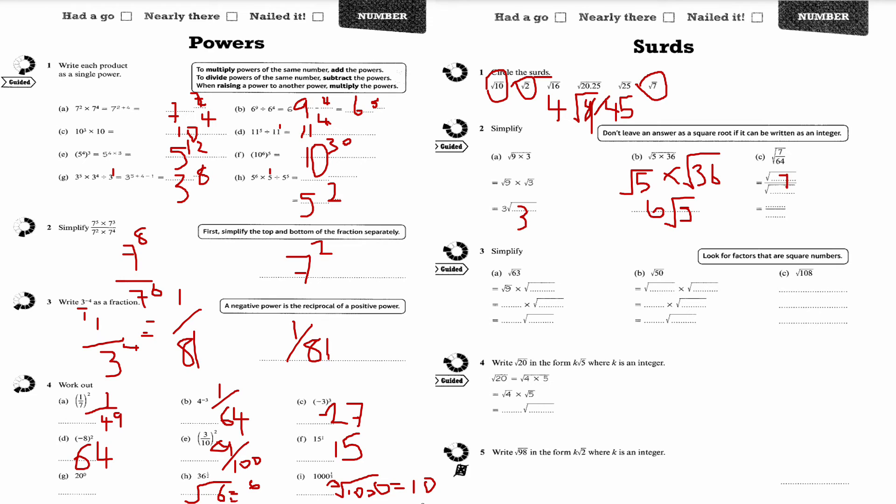This is root 7 over root 64. Root 7 stays the same, so the answer becomes root 7 over 8.